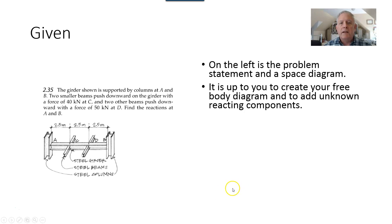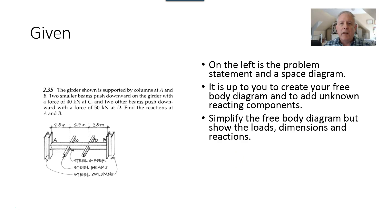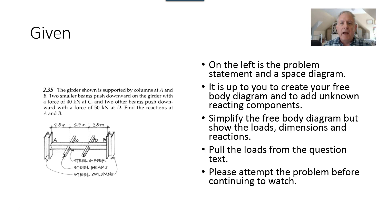So just like I did, read the problem, look at the illustration and establish a strategy for solving it. You're going to need to create your own free body diagram and add the unknown reacting components. Simplify the free body diagram but show the loads, dimensions and reactions. You're going to show the loads as arrows and label it with numbers. Pull the loads from the question text as I just showed you and pause the video, go ahead and do it yourself and after you've finished, come back and I'll show you how I did it.